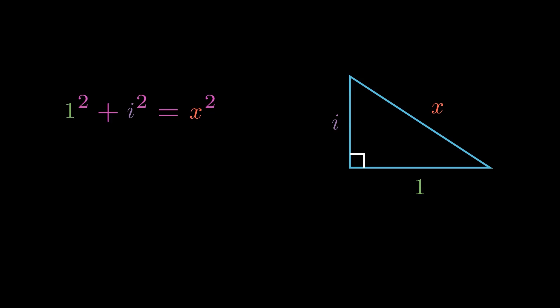We can quickly simplify this. 1 squared just becomes 1, and i squared becomes minus 1.